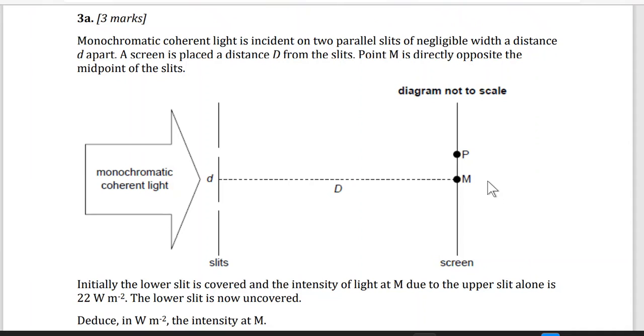The question says we have monochromatic coherent light. Monochromatic means one color - red, green, purple, one color. It's incident on two parallel slits, so here we will have constructive and destructive interference pattern. The light waves will spread out as they pass through these two slits.